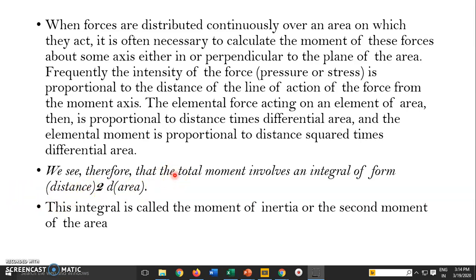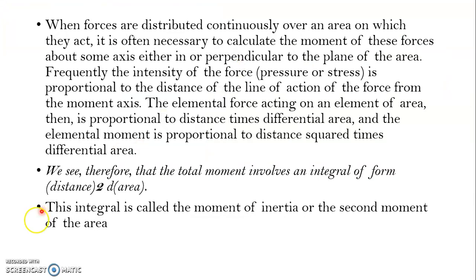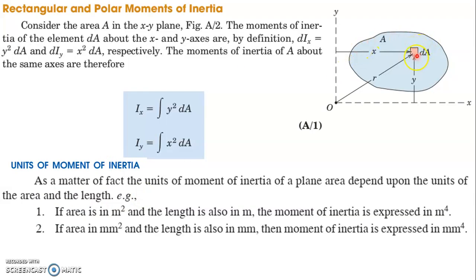Here we have some area, and we consider a small section dA. I have marked the x-axis, y-axis, and a third axis perpendicular to this plane. The variable y is the distance from the section to the y-axis. Moment of inertia is defined as distance squared multiplied by area. The moment of inertia with respect to the x-axis is given as IXX, equal to y² · dA, where y is the distance from the x-axis.